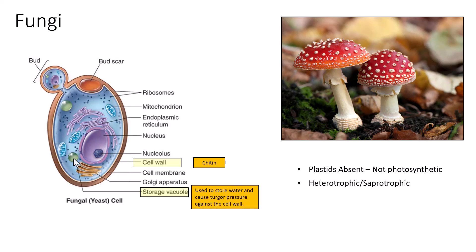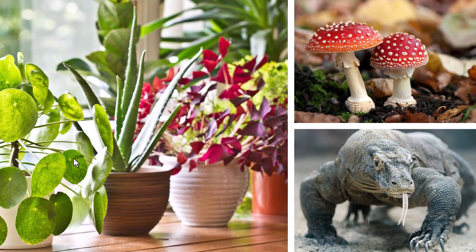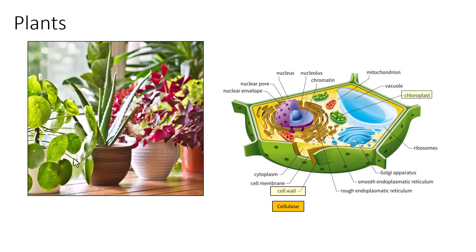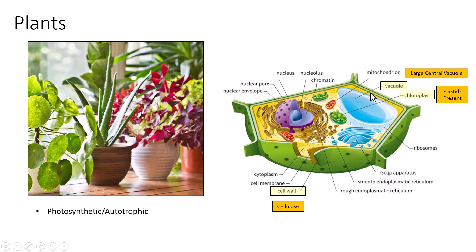Fungi are non-photosynthetic; they are heterotrophic or saprotrophic, meaning they are decomposers that consume other organisms. Plants, in contrast, have a cellulose cell wall giving a rigid shape, and they have plastids such as chloroplasts. Plants have a large central vacuole storing water and carbohydrates, which also causes turgor pressure. Plants are photosynthetic and autotrophic — they produce their own food and are non-heterotrophic.